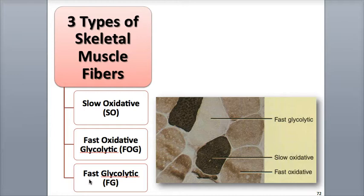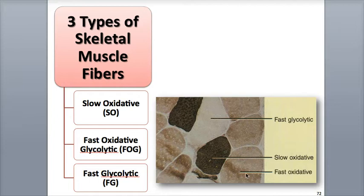Skeletal muscles are a mix of these different types of fibers. Slow oxidative fibers have a dark red coloration. Fast oxidative glycolytic fibers have a dark red or pink coloration. And Fast glycolytic fibers have a white or pale coloration.